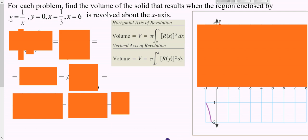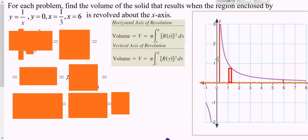Here we have our inverse function y equals 1 over x, and y equals zero which is the x-axis, x equals a third, and x equals six. Graph all of that and know that you're looking for the shape bounded by all of those — your two red vertical lines, the purple curve, and the x-axis. The shape we're dealing with is this shape right in here.